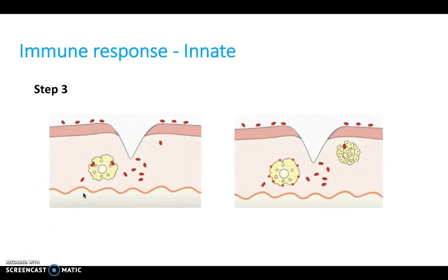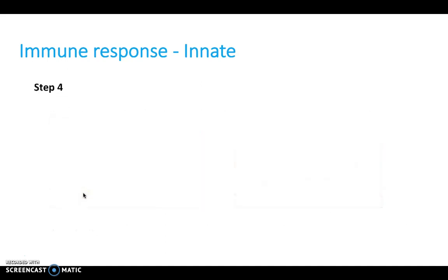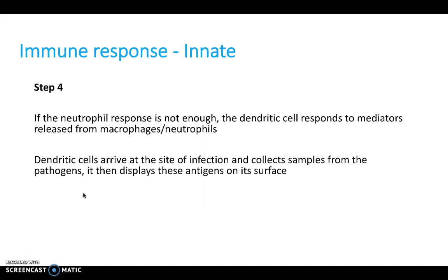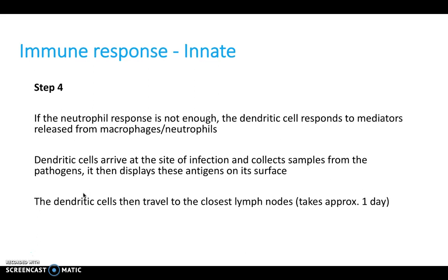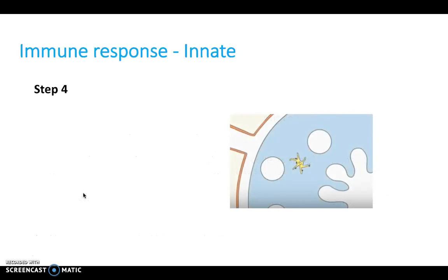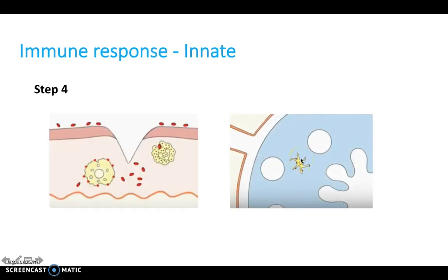Here comes the neutrophil also carrying out phagocytic behavior. If the neutrophil response is still not enough, the dendritic cell comes along, responding to mediators released from macrophages and neutrophils. It takes part of the antigen on its cell surface and goes to the nearest lymph nodes — but this takes about a day. This marks the start of the adaptive immune response.